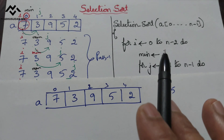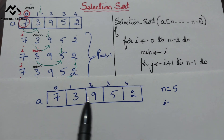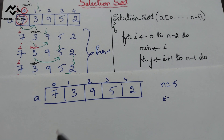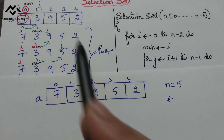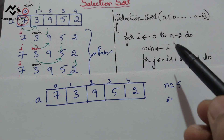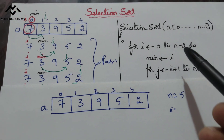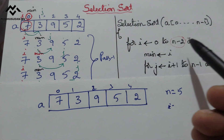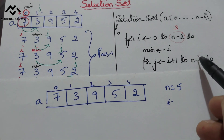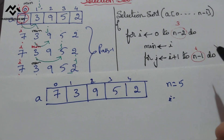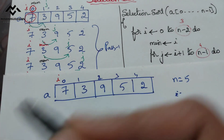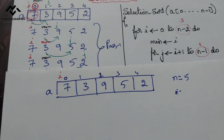Let us analyze the same algorithm. We are taking the same example in another sheet. The number of elements is equal to 5, so n minus 2 is 5 minus 2 which is 3, and n minus 1 is 4. Initially i is equal to 0, so i is pointing to index 0.